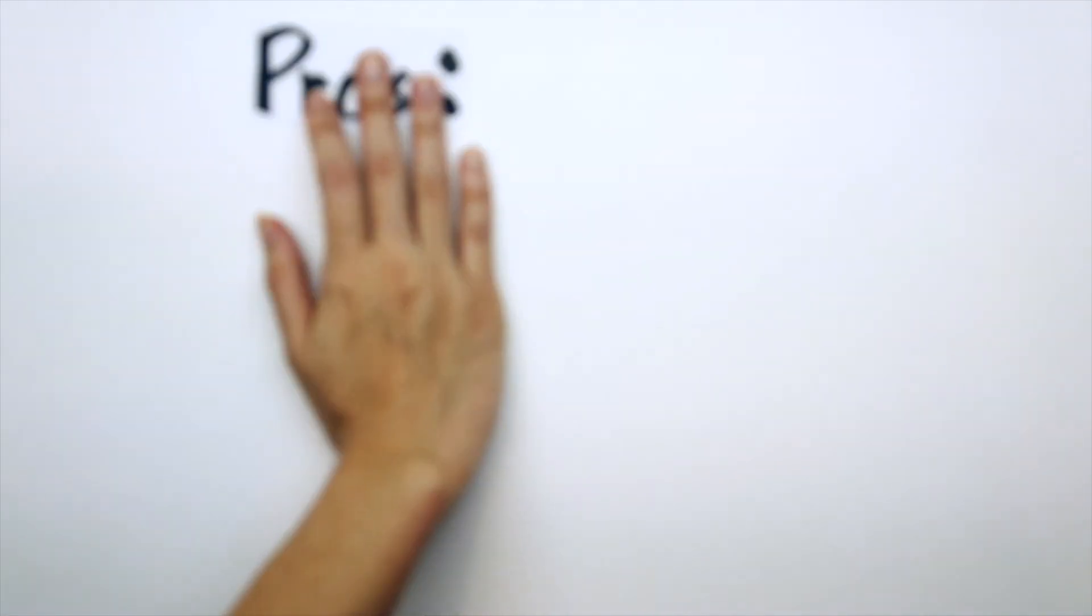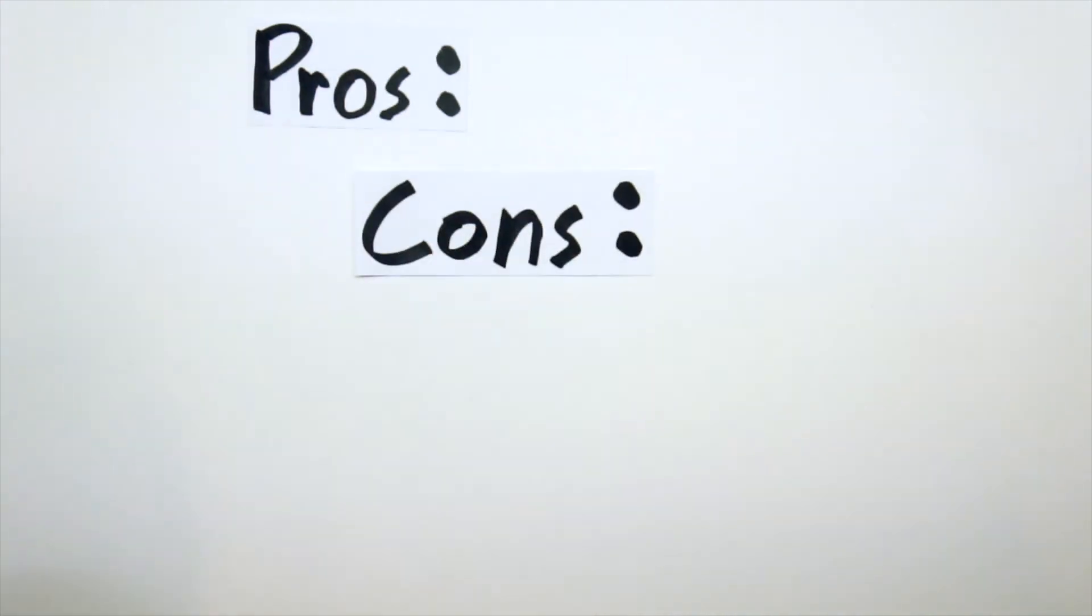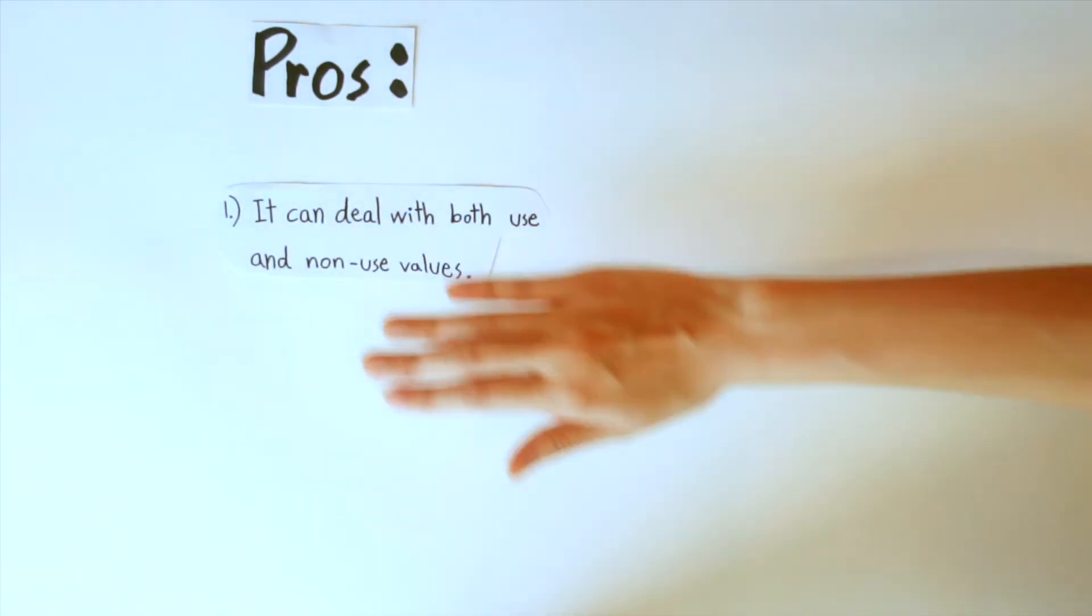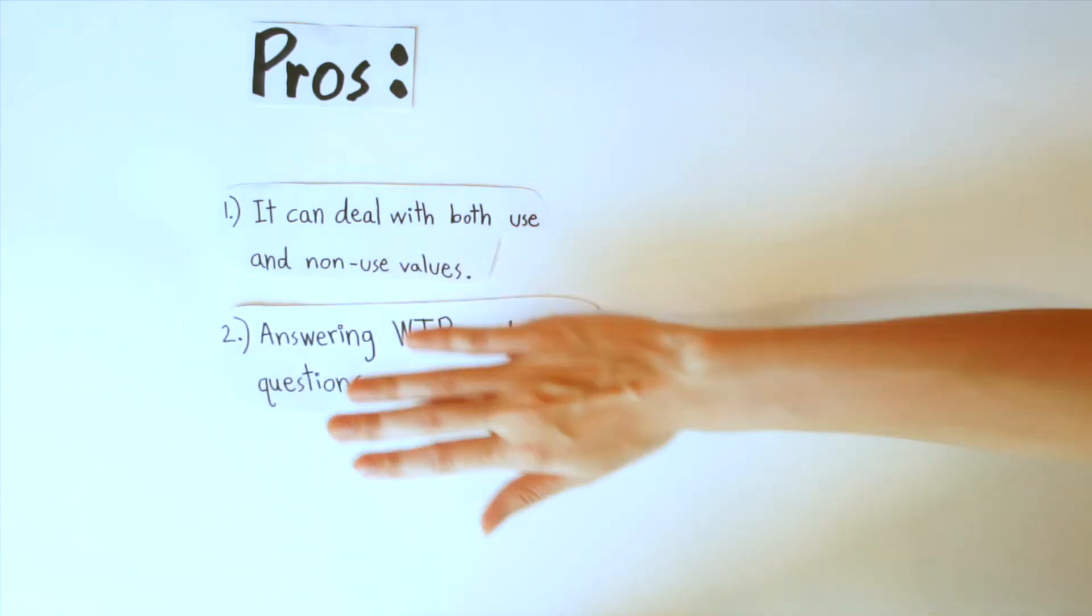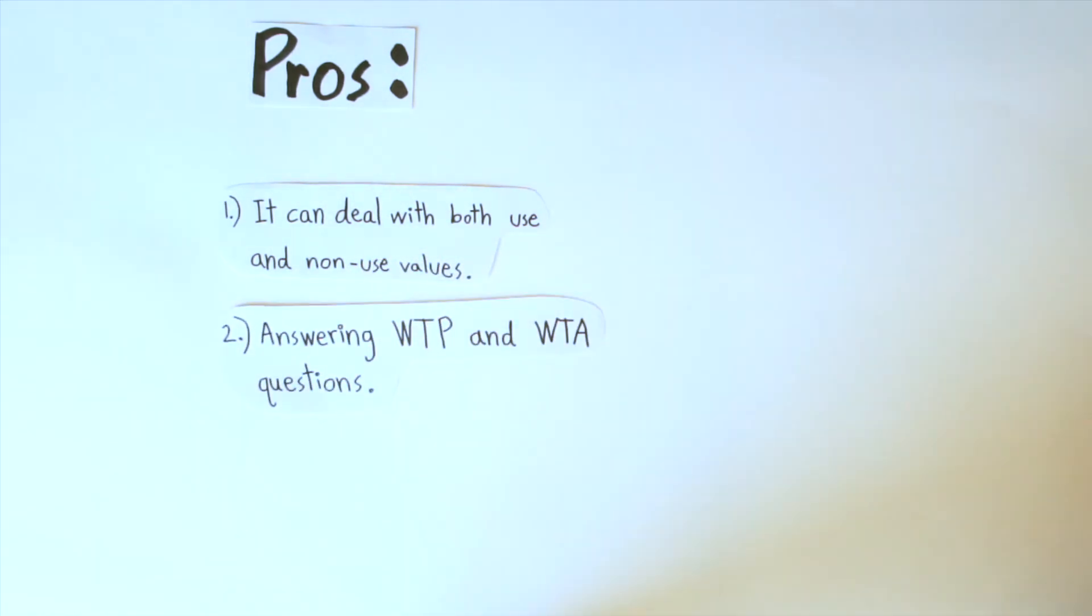Pros and cons of the CVM. The pros are, first, it can deal with both used and non-used values. Second, by answering WTP and WTA questions, it directly goes to correct monetary measures of utility changes.